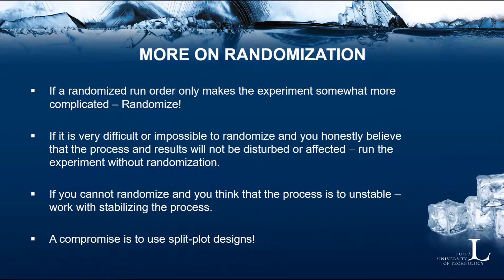When and when perhaps not to randomize: if a randomized run order only makes the experiment a little bit more complicated, we should randomize. If it is very difficult or even impossible to randomize, and we honestly believe that the process and the results will not be affected by a non-randomized run order, then we can run the experiment without randomization. But this is perhaps quite unusual. If you cannot randomize and you think the process is unstable, then we should try to work on stabilizing the process. A compromise to consider is split-plot designs, which we will cover later in the course.